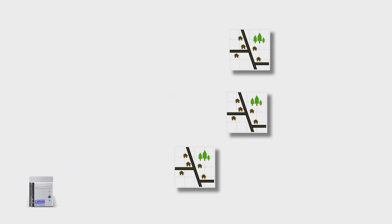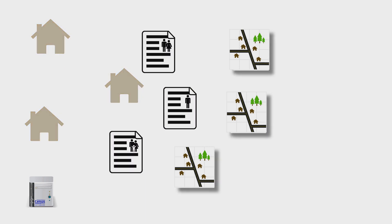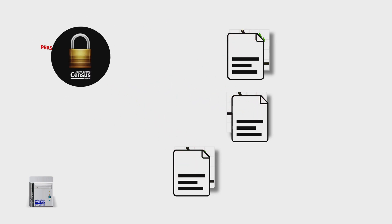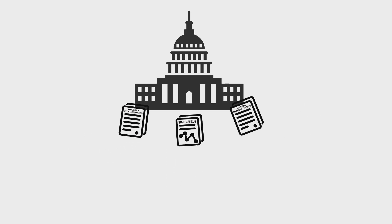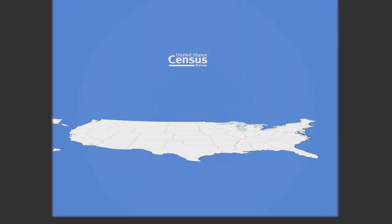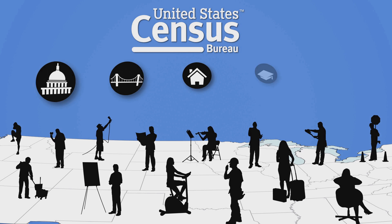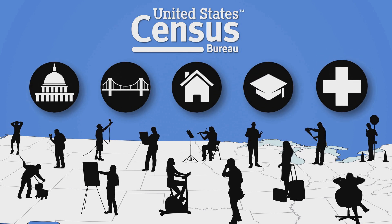Geographers give the updated geography database to statisticians. Statisticians combine the updated geography data with household data from the 2020 Census and other incoming surveys, removing all personally identifiable data. The Census Bureau can now report the number of veterans in your city, the number of school-aged children in your county, and more.